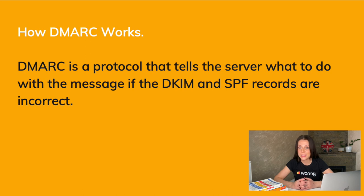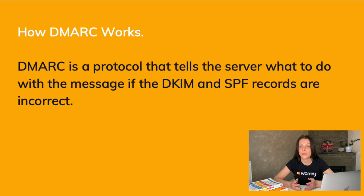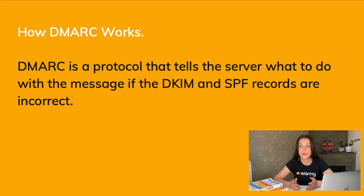Let's see how these records differ. DKIM works by embedding encrypted data about who and when the letter was sent; the mail provider decrypts this using the public key from the sending domain. SPF indicates whether a particular server is allowed to send emails from that domain, identified by its IP address. For example, when you send a campaign using a cold mailing service or set up corporate mail, you delegate the provider's server the right to send emails from your domain. SPF detects a trusted sender by IP.